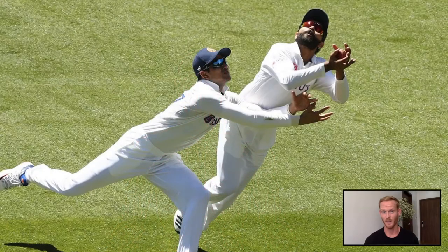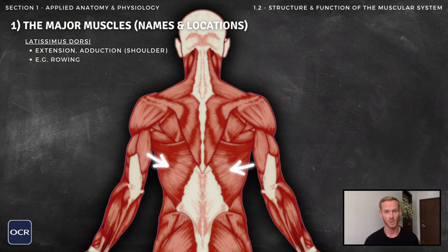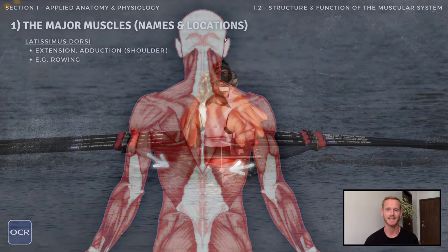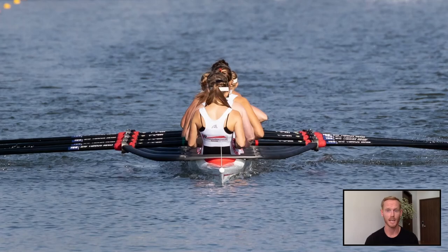The abdominals stabilise the core and create rotation in the upper body, and flexion or a forward bend in the spine. For example, a gymnast uses their abdominals to adopt a tucked position when performing a somersault. The trapezius is located at the top of the back and creates extension in the neck, enabling a cricket player to tilt their head back when preparing to take a catch. The latissimus dorsi spans the middle and lower portions of the back. It creates adduction and extension at the shoulder joint, and is central to pulling actions, for example when rowing.